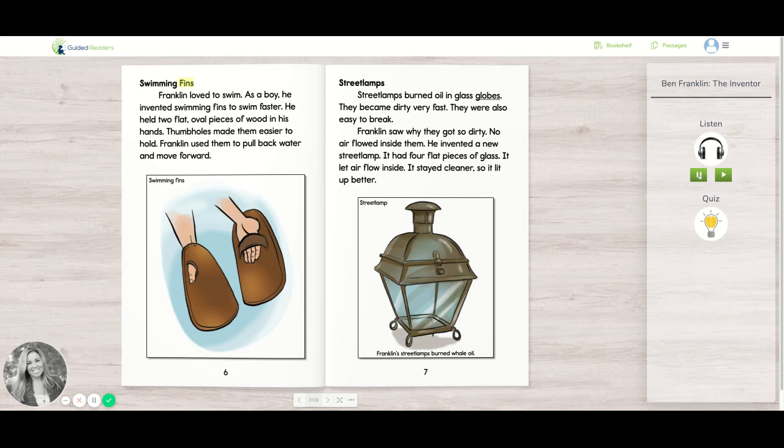Swimming Fins. Franklin loved to swim. As a boy, he invented swimming fins to swim faster. He held two flat oval pieces of wood in his hands. Thumb holes made them easier to hold. Franklin used them to pull back water and move forward.